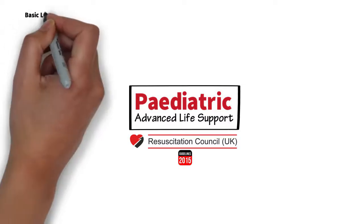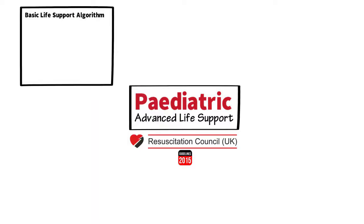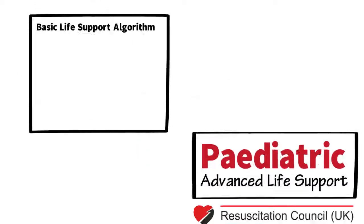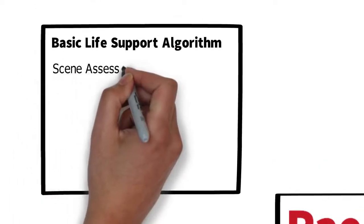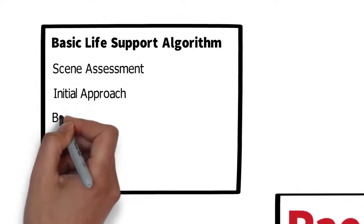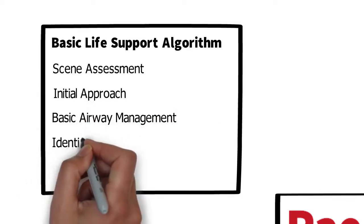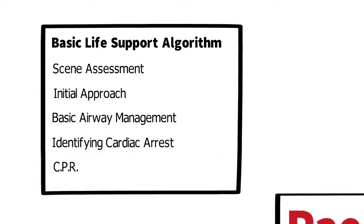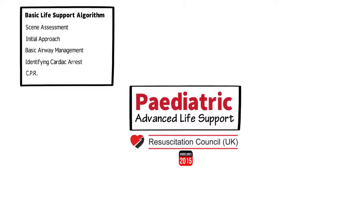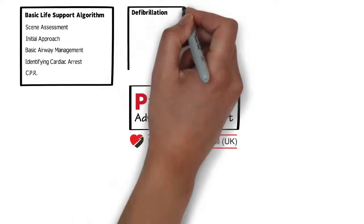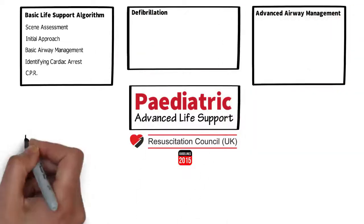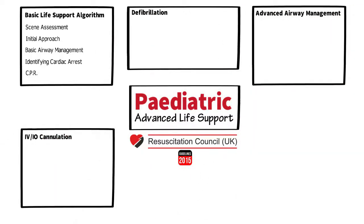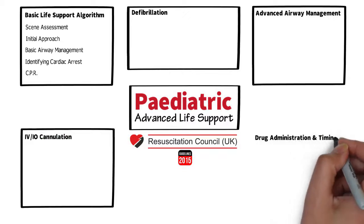We'll build on the paediatric BLS algorithm which we have examined previously. In broad terms that consists of scene assessment, initial approach, basic airway management, identifying cardiac arrest, and CPR. In this session we're going to build on that basis and examine the extra components of ALS. The main categories for this are defibrillation, advanced airway management, and IV or IO cannulation and drug administration and timings.